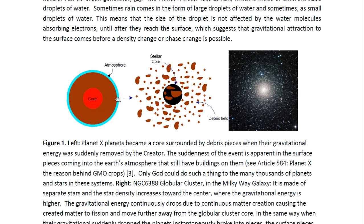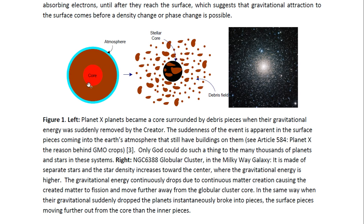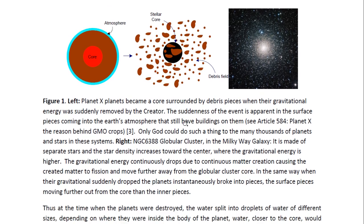Here you see a diagram which illustrates what occurred to the Planet X planets and what caused their formation. They started out as living celestial objects and then their gravitational energy was removed and they turned into a dead core surrounded by a debris field. This happened very suddenly and it could only have been done by the Creator. Only the Creator could have removed photon energy or light energy from the particles making up objects like this. The fact that it happened so suddenly can be seen from the fact that these objects are still all coming into the Earth's atmosphere — at least the pieces of debris — and some of these pieces still have buildings on them that are still intact and not in ruins. You may look at Article 584 for details on that.